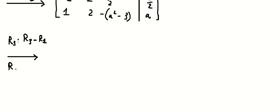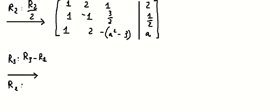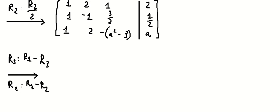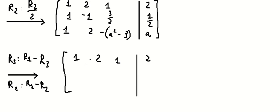And then we use row number one minus row number three. After that, row number one minus row number two, so we get the matrix looking like this.